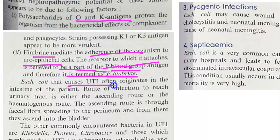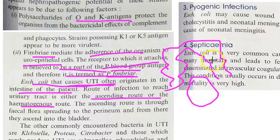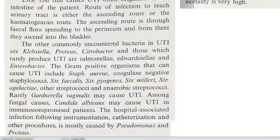E. coli that causes UTI often originates in the intestine of the patient itself. It reaches the urinary tract either by the ascending route — from fecal flora spreading to the perineum and ascending into the bladder — or by hematogenous spread. Other commonly encountered bacteria causing UTI include Klebsiella, Proteus, and Citrobacter.